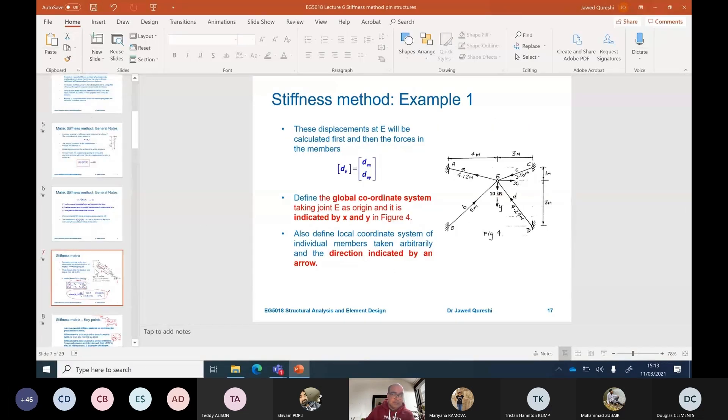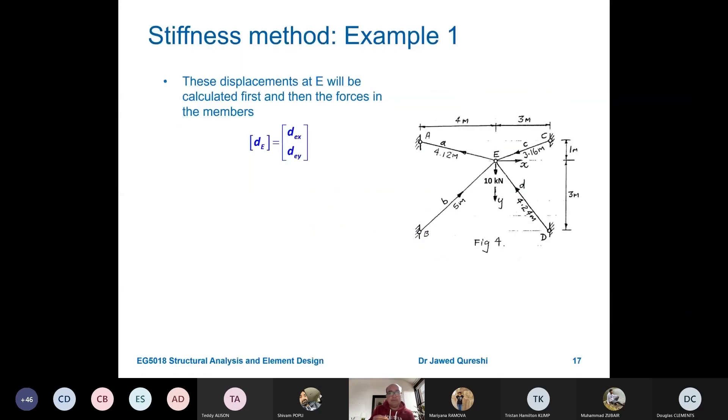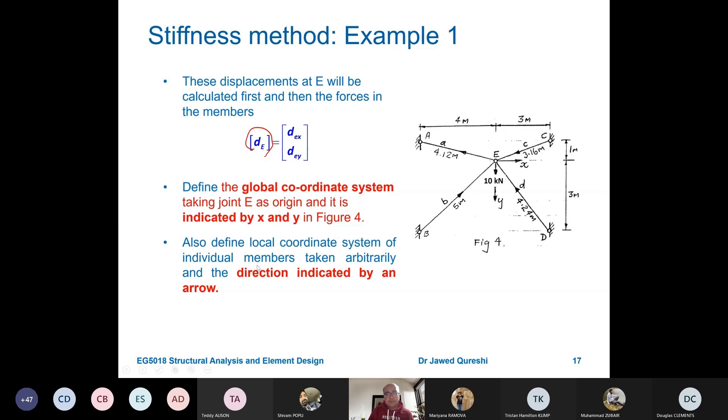We will use formula for element stiffness matrix. The displacement at E will be calculated first. DE will have displacement in X and Y direction. Define global coordinate system taking joint E as origin as indicated by X and Y in this figure. Also define the local coordinate system of individual members. These are indicated by these arrows. Now, how do we put these arrows? I have just taken it arbitrarily.